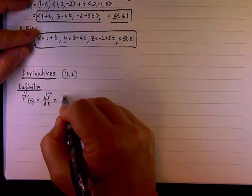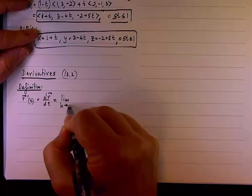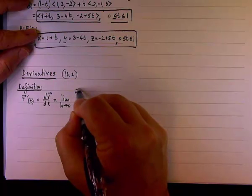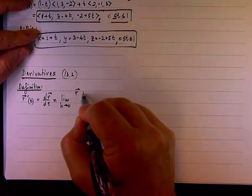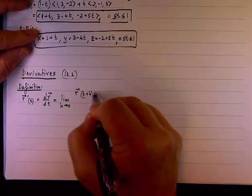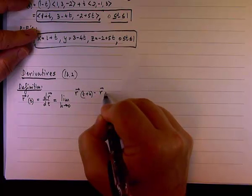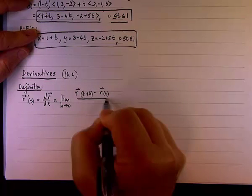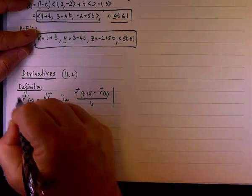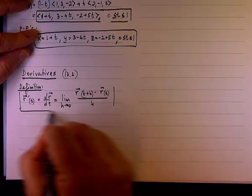And by definition, it will be the limit as h approaches 0 of r(t+h) minus r(t) divided by h. Remember that? So this is the limit definition of the derivative.